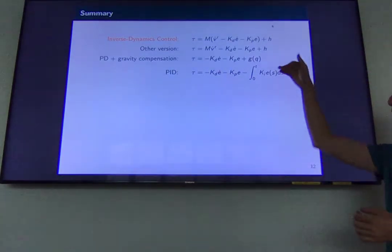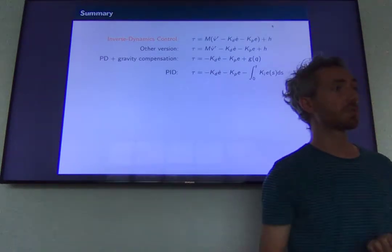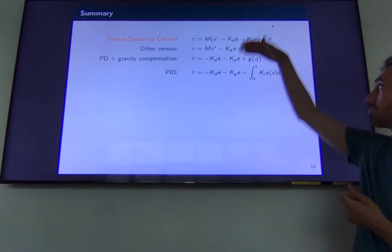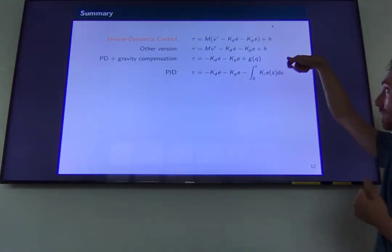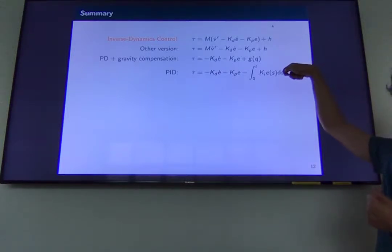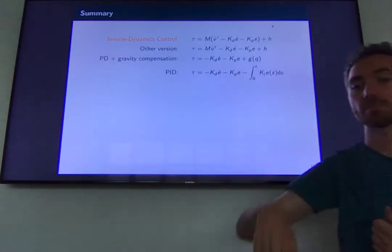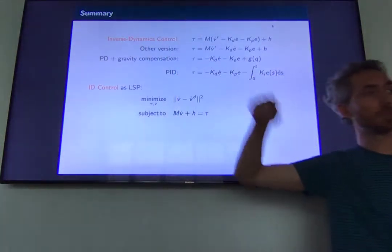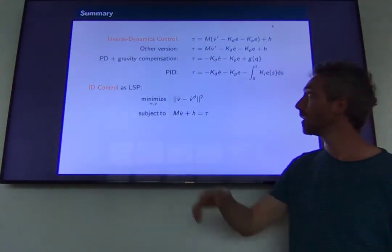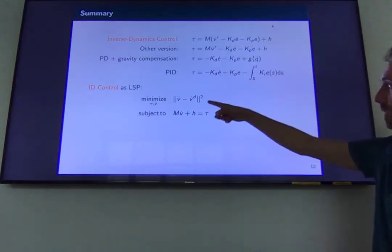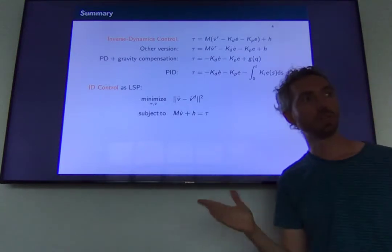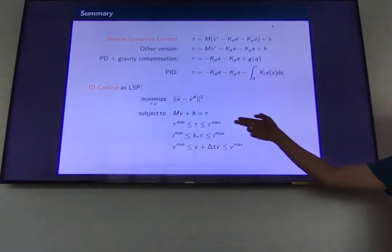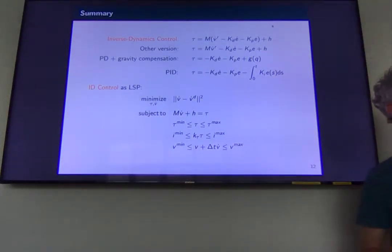In practice, however, the more of your model you use, the less robust your controller is, because if your model is wrong you may have stability issues. PID is stable and requires no model, so it's guaranteed to be the most robust. We've decided to focus on Inverse Dynamics Control, which is the subject of this week, and we've seen that you can rewrite it as an optimization problem. Thanks to that, we can add inequality constraints: torque limits, current limits, and joint velocity limits.